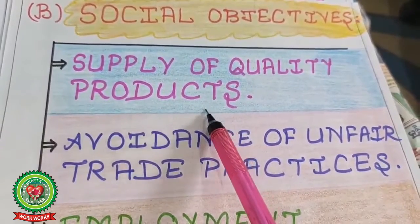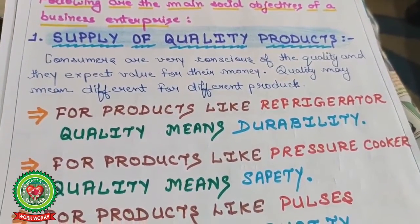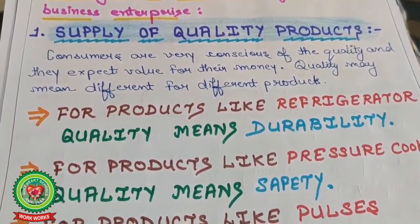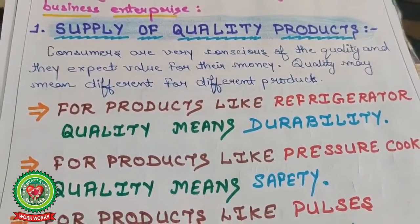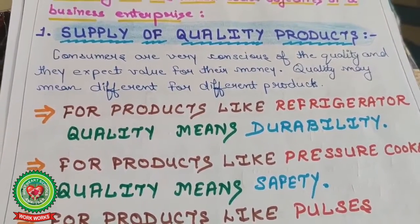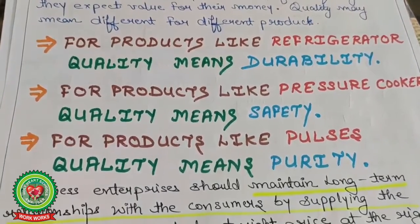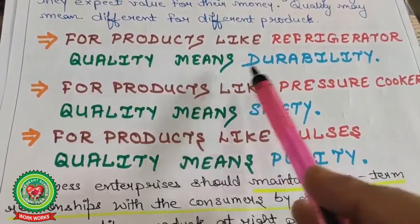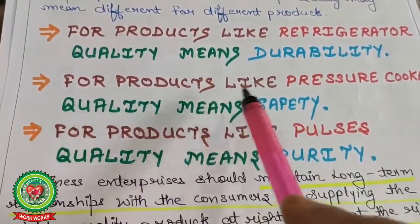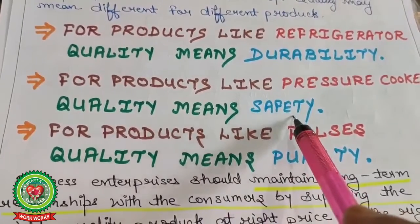According to the book, the first social objective is supply of quality products. Consumers are very conscious of quality and expect value for their money. When you spend money, you want satisfaction. Quality may mean different things for different products — for example, for refrigerators, quality means durability. For pressure cookers, quality means safety.